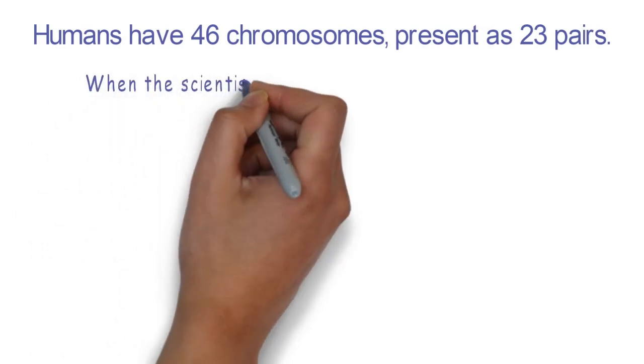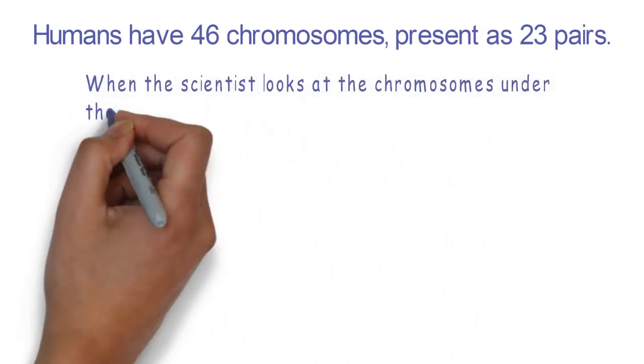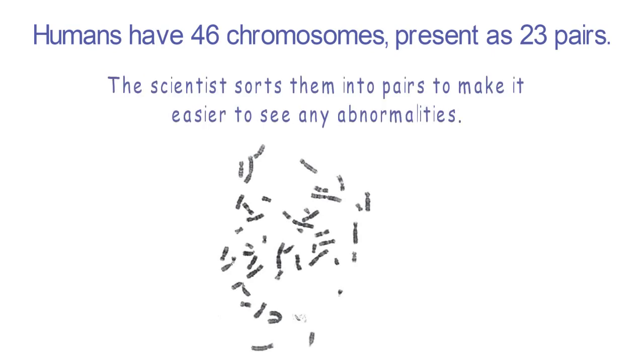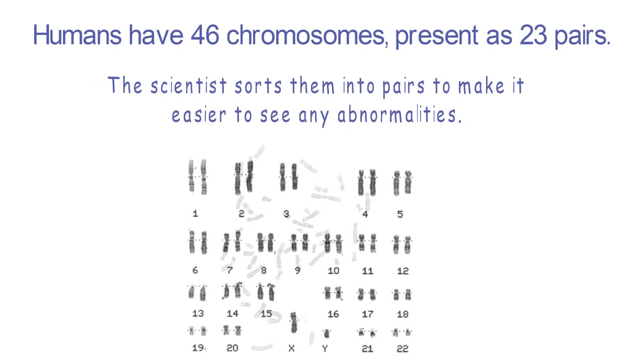When the scientist first looks at chromosomes under the microscope, they're all mixed up. The first step is to take a digital image and sort them into pairs. This makes it easier to see any abnormalities that may be present.